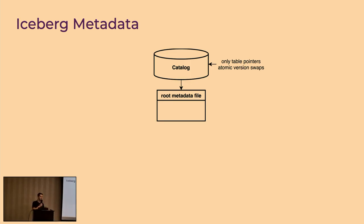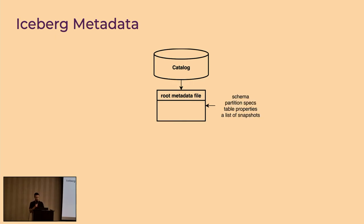The only requirement for a system to act like an Iceberg catalog is the ability to atomically swap table pointers, which means that basic compare-and-swap functionality is going to be enough. There is no need for fancy lock mechanisms, even though you can implement atomic swap through a log — this is what we do in HMS, for example. The root metadata file is self-contained: it includes information about the schema of the table, partitioning specs, table properties, and a list of valid snapshots.